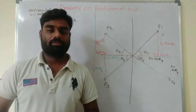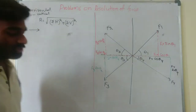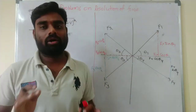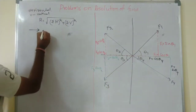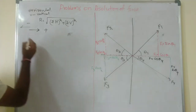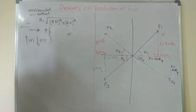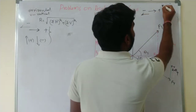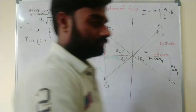One very important condition is the sign convention for directions: right, left, up, and down. The force acting in the right side direction is positive; in the left side direction, it is negative. The force acting in the upward direction is positive; downward direction is negative. These four sign conventions are very important.